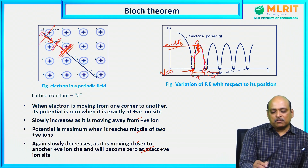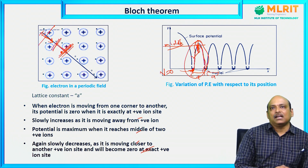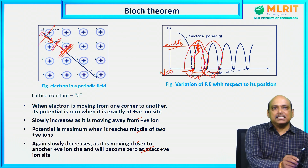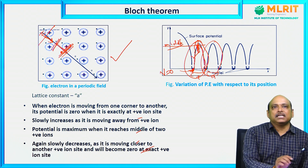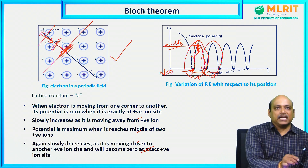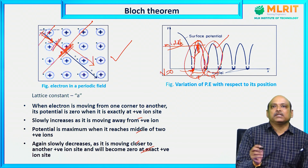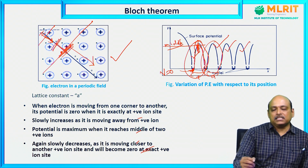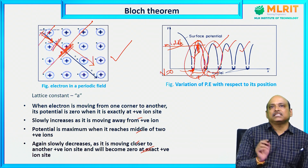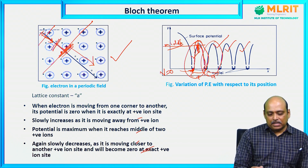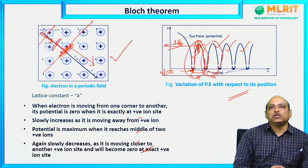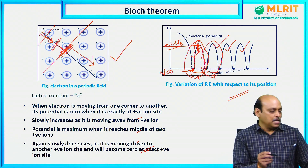The first graph profile we obtained shows this variation. Since the metal is in a periodic field — with ions arranged systematically — the same form is repeated between the next two positive ion sites. That is why we get a repetition of the same potential energy profile with respect to position. Again and again, the same potential energy variation can be seen in this periodic field. This concept is called Bloch Theorem.